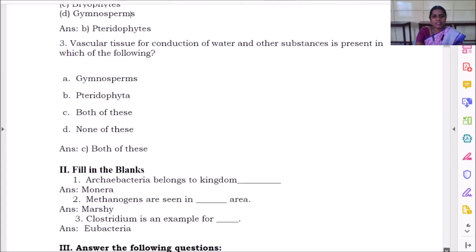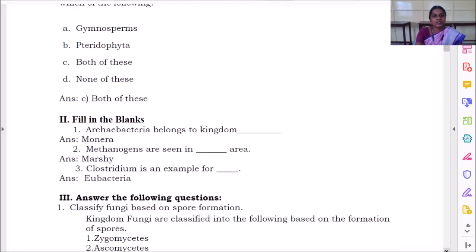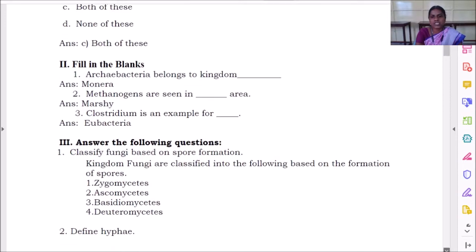Next we have fill in the blanks. Archaebacteria belongs to kingdom monera. Methanogens are seen in marshy area. What is marshy? Marshy means swampy area.